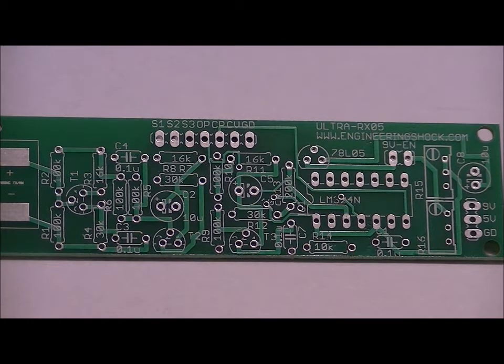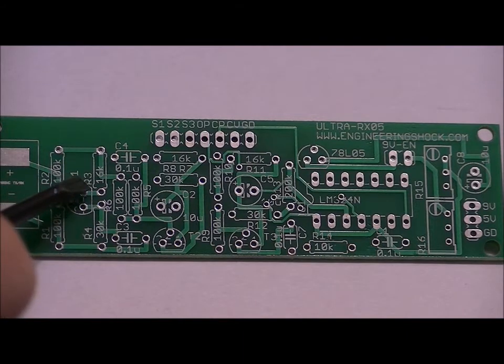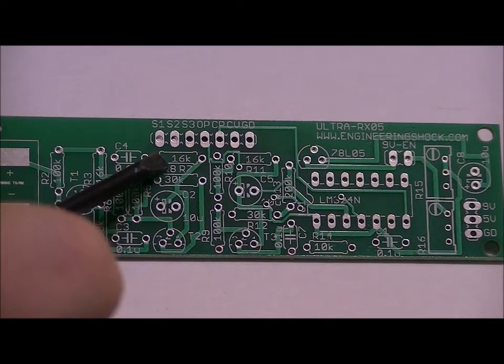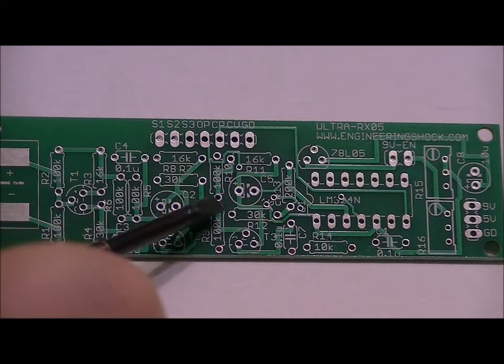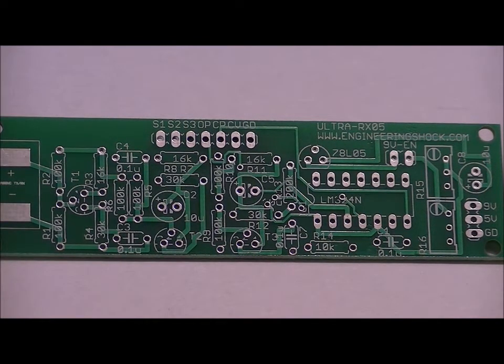Now we've got our three 16k ohm resistors, and they go in the R3 slot labeled R3 16k, R7 16k, and R11 16k.